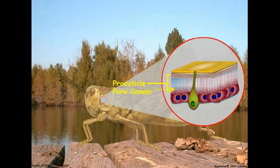Pore canals are minute tubular channels that extend from the epidermal cells through the procuticle and end below the epicuticle. The pore canals may be formed by cytoplasmic extensions of the epidermal cells as the procuticle is formed following a molt.